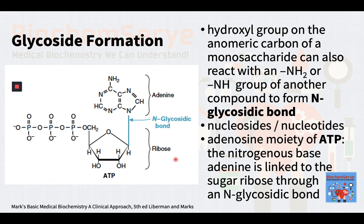As mentioned previously, the hydroxyl group on the anomeric carbon of a monosaccharide can also react with an NH group of another compound to form an N-glycosidic bond. N-glycosidic bonds are found in nucleosides and nucleotides. For example, in the adenosine moiety of ATP, the nitrogenous base adenine is linked to the sugar ribose through an N-glycosidic bond.